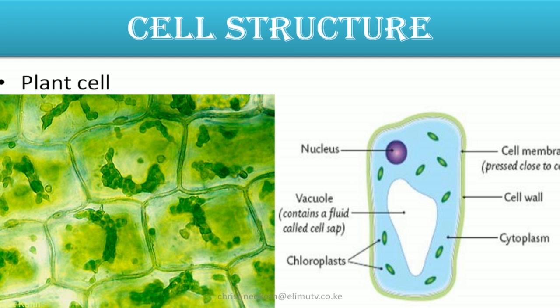We have a cell membrane, then we have a cell wall. Inside the cell we have a cytoplasm. We have the nucleus — the visible purple structure there. Then we have a vacuole. We're going to look at some of the functions of these structures, and lastly when you look at a plant cell you observe something we call a chloroplast. Those are the features that you see when you look at a plant under a light microscope.